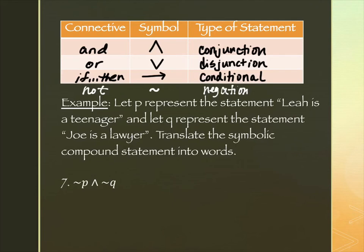You might wonder what's the point of the symbols, but we're going to need them for things we'll do later. Our statement is given in symbols: tilde-P, an upside-down V, and tilde-Q. Reading left to right, P is "Leah is a teenager," and tilde in front creates the negation: "Leah is not a teenager."